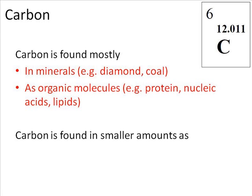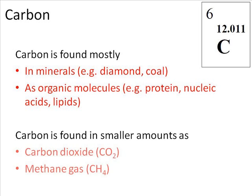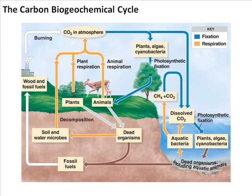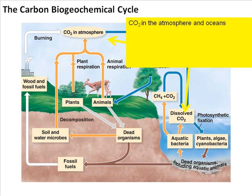Besides minerals and organic molecules, we can find smaller amounts of carbon in the form of carbon dioxide found in our atmosphere as a gas, as well as methane gas found as fossil fuels deep in the core of the Earth or the bottom of the oceans. Let's see how carbon can cycle between these four categories. This figure shows the carbon biogeochemical cycle. We're going to start with carbon dioxide — the small amount of carbon found in Earth's atmosphere.